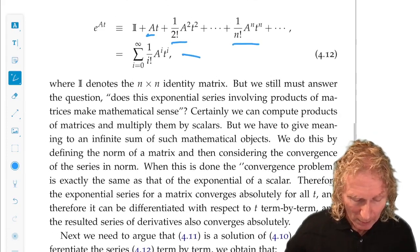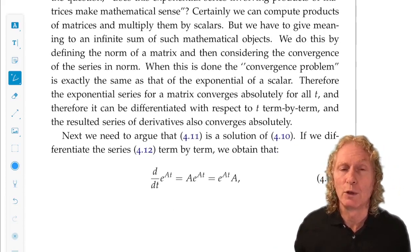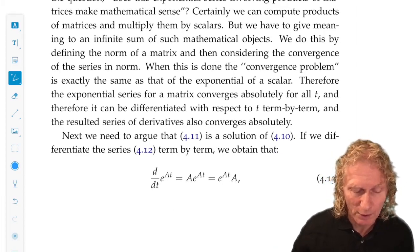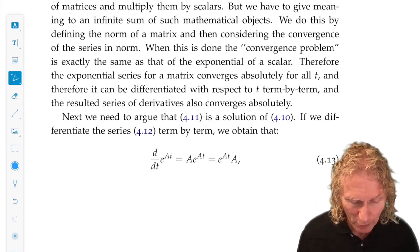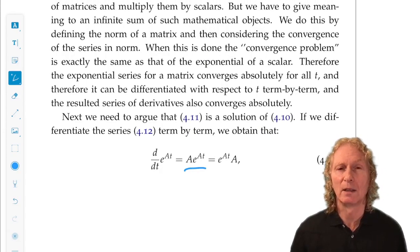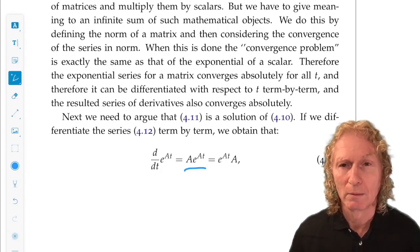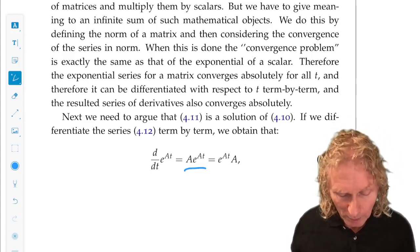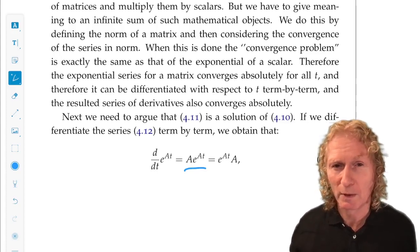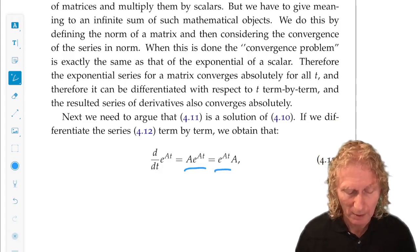And we can differentiate it with respect to t term by term. So if you want to know what the derivative of e to the At is, if you just differentiate this series term by term, it's a simple matter to show that it's A e to the At, and A commutes with any power of A. You can prove that. Generally, matrices do not commute, but in this situation, the relevant matrices A and e to the At do commute, and this is true.